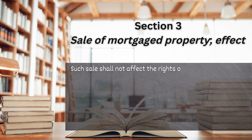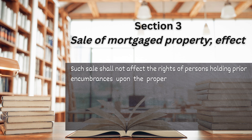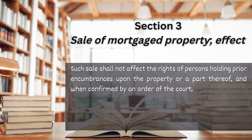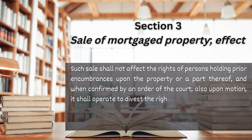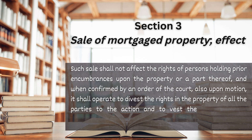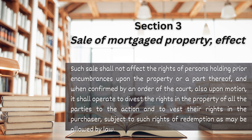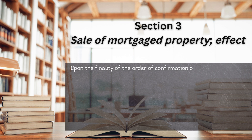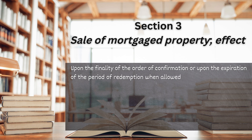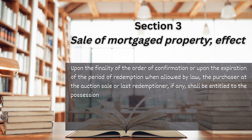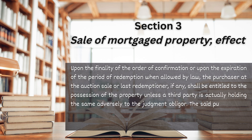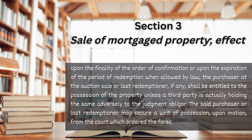Such sale shall not affect the rights of persons holding prior encumbrances upon the property or a part thereof, and when confirmed by an order of the court also upon motion, it shall operate to divest the rights in the property of all the parties to the action and to vest their rights in the purchaser, subject to such rights of redemption as may be allowed by law. Upon the finality of the order of confirmation or upon the expiration of the period of redemption when allowed by law, the purchaser at the auction sale or last redemptioner, if any, shall be entitled to the possession of the property unless a third party is actually holding the same adversely to the judgment obligor.